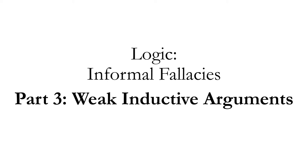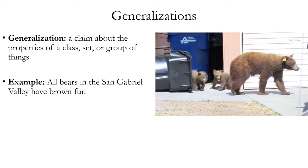Informal Fallacies Part 3: Weak Inductive Argument Fallacies. Many types of weak inductive arguments have to do with generalizations. A generalization is a claim about the properties of a class, set, or group of things.